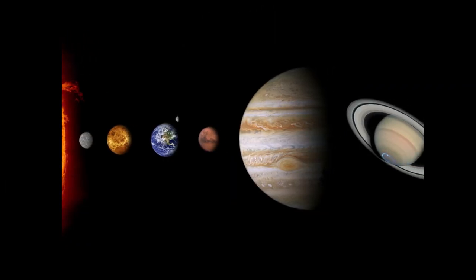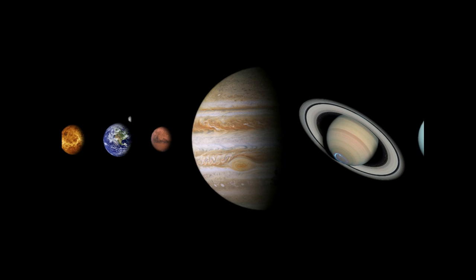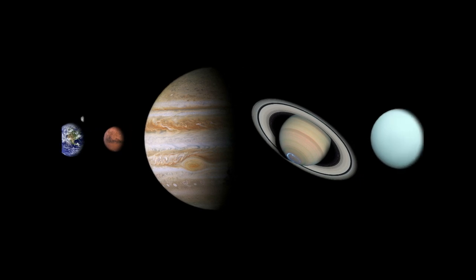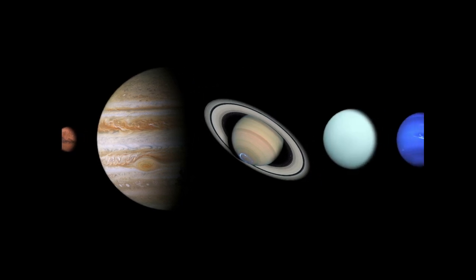In our solar system there are eight planets: Mercury, Venus, Earth, Mars, Jupiter, Saturn, Uranus, and Neptune.